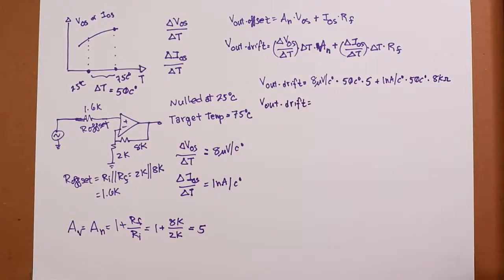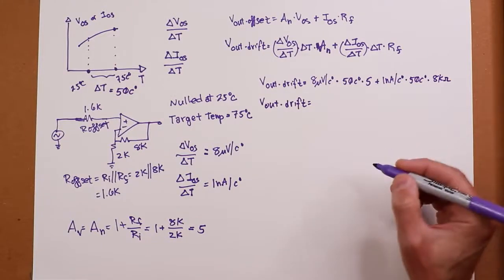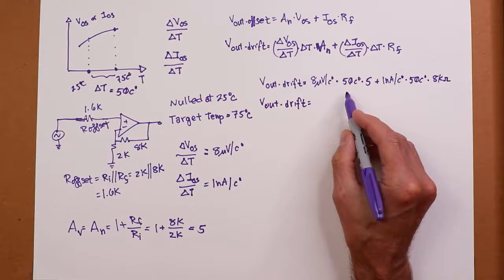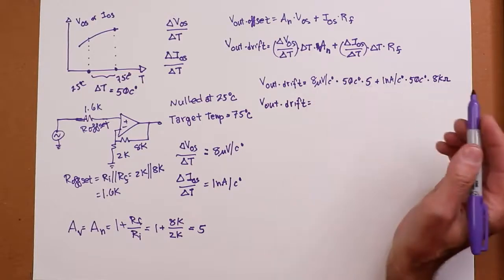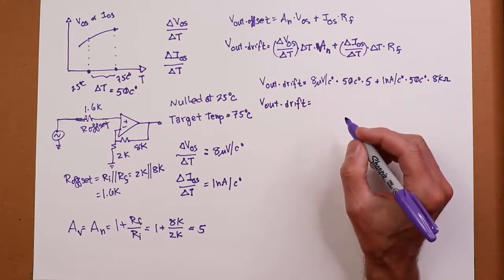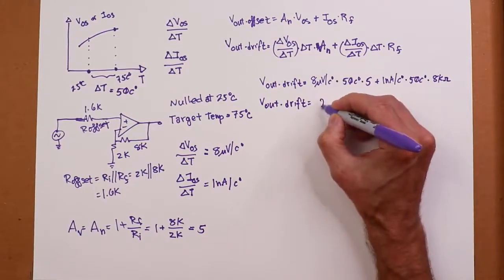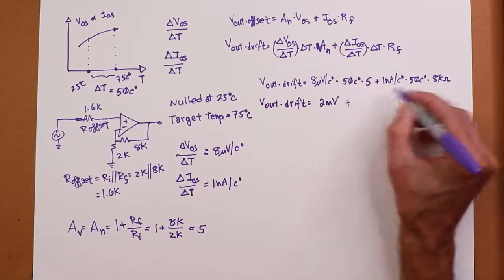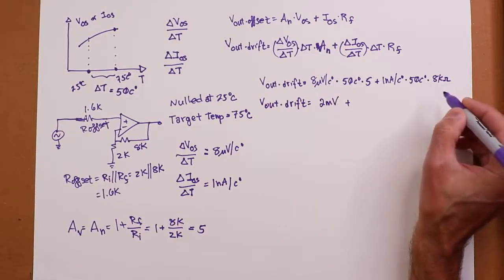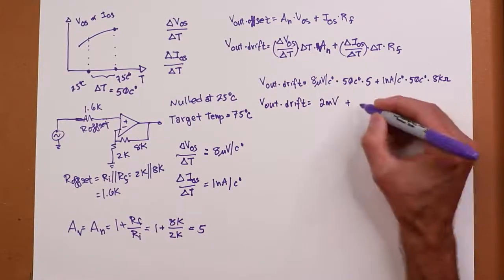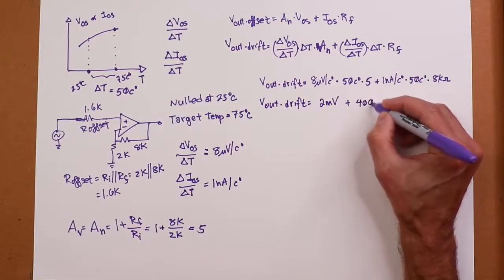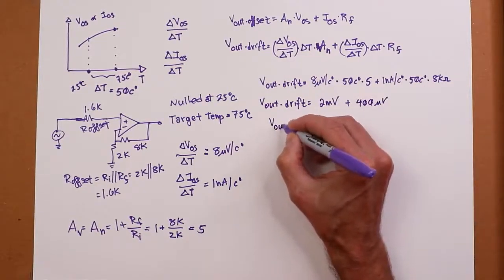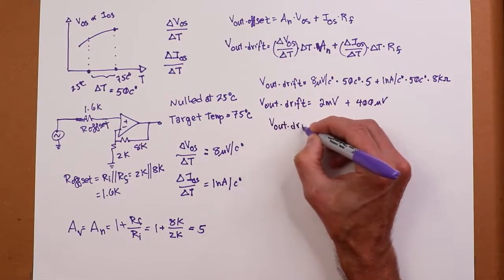Alright. Now plug these things in to the 8 micro times the 50 times the 5, or 8 times 250. That's going to get us 2 millivolts. And then the other piece, right, the 1 nano times the 50 times the 8, let's see, that's 400 micro. So we add those together.